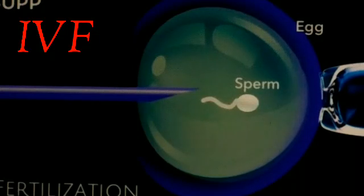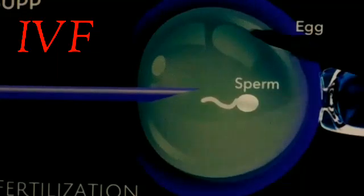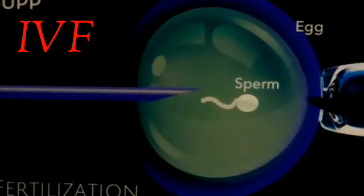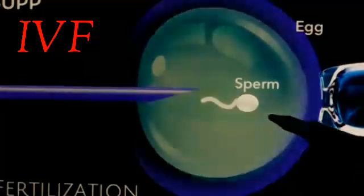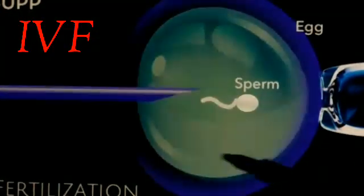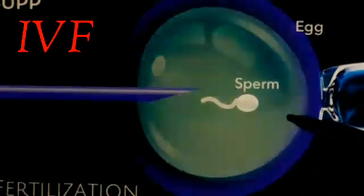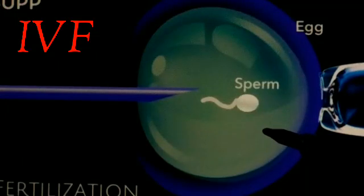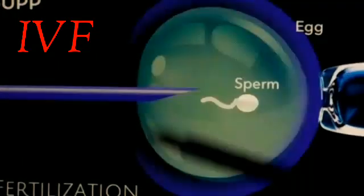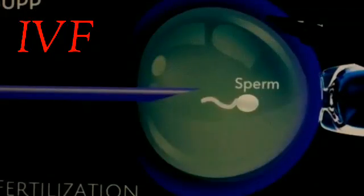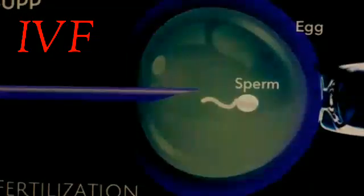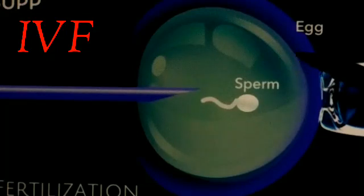In IVF, the sperm is injected into the ovum, and the zygote embryo formation takes place. When this embryo is formed, the zygote is implanted in the uterus of a woman, and the growth of the child takes place there.